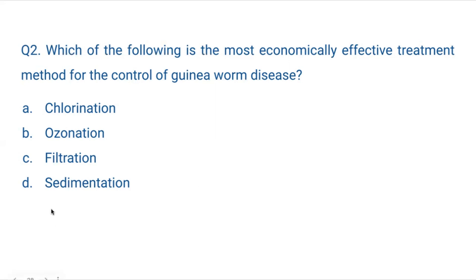Sedimentation is not enough for guinea worm disease. Ozonation is an expensive treatment. The two viable options are chlorination and filtration — both are cheap methods. Just filter the water and it will be free from guinea worms. The simplest and most economical method is filtration, followed by chlorination.